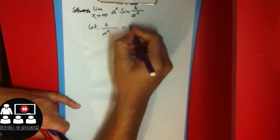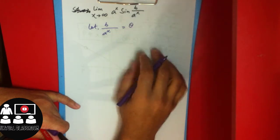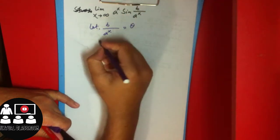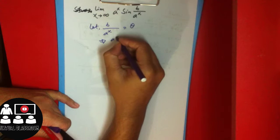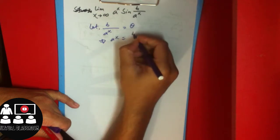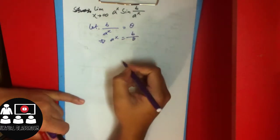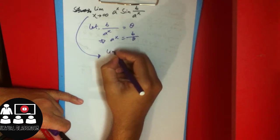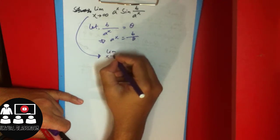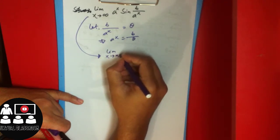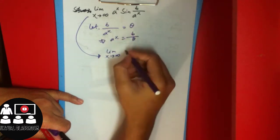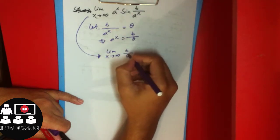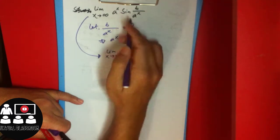Let a to the power x equal theta. So then we can write: a to the power x equals b divided by theta. Now taking the limit as x approaches infinity, we have theta to the power x equals b divided by theta.